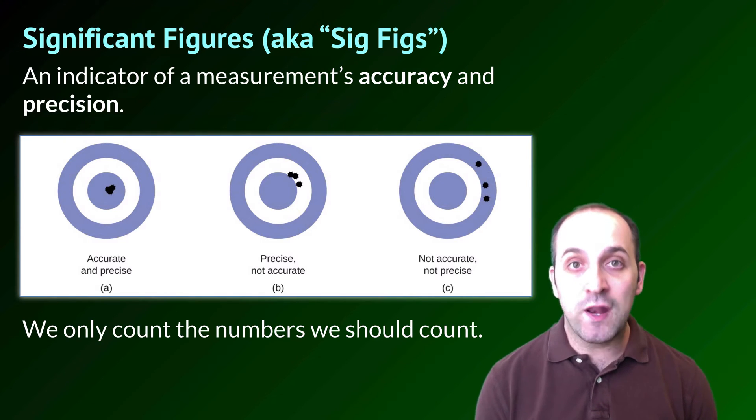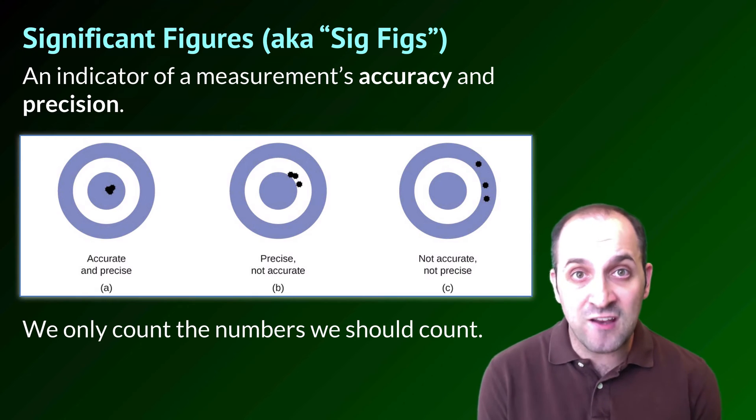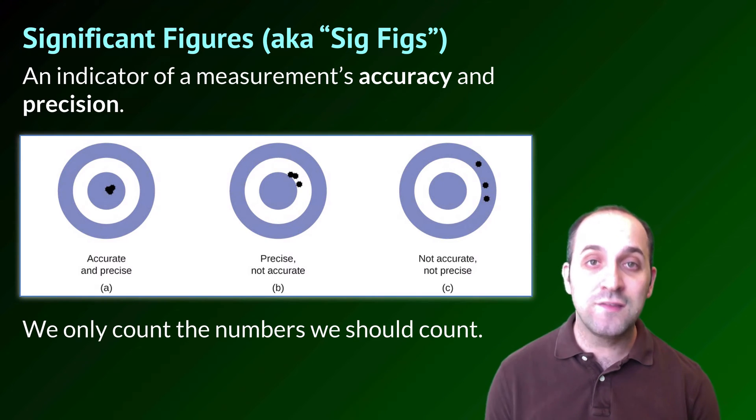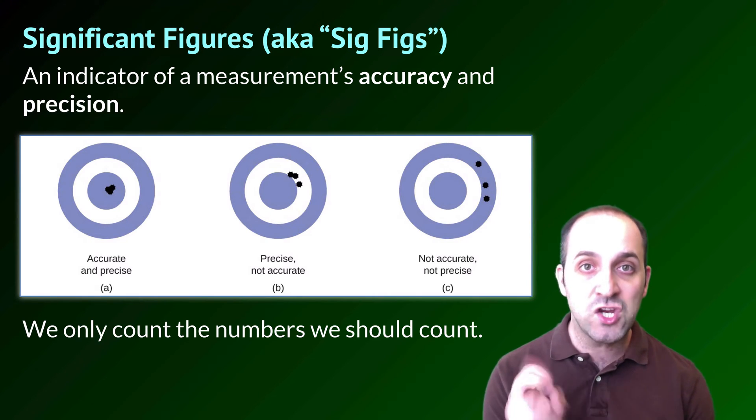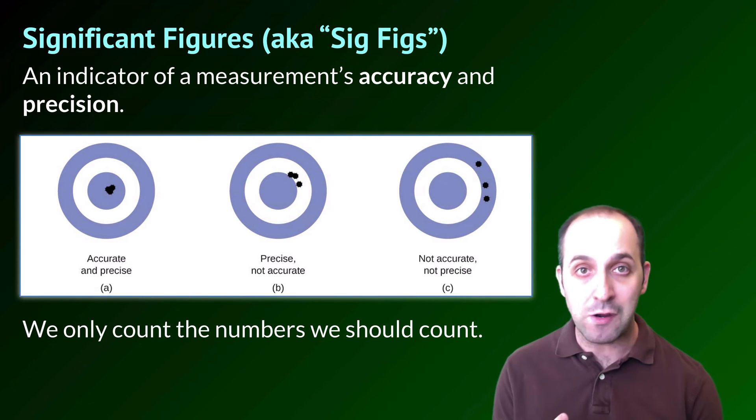If you're both accurate and precise, your pattern of darts are always going to be on the bullseye in very close space. You could also be precise but not accurate. In that case, you would continue to make your throws to the same location, but that location is not actually close to the bullseye that you're aiming for.